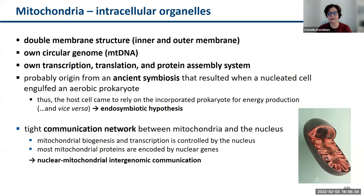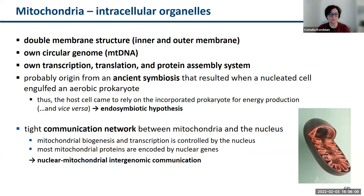The host cell came to rely on the incorporated prokaryote for energy production — this is the so-called endosymbiotic hypothesis. And vice versa, the prokaryote came to rely on the host cell for protein production and so on. There is a very tight communication network between mitochondria and the nucleus. Mitochondrial biogenesis and transcription is very well controlled by the nucleus, and most mitochondrial proteins are indeed encoded by nuclear genes — a nuclear-mitochondrial intergenomic communication.